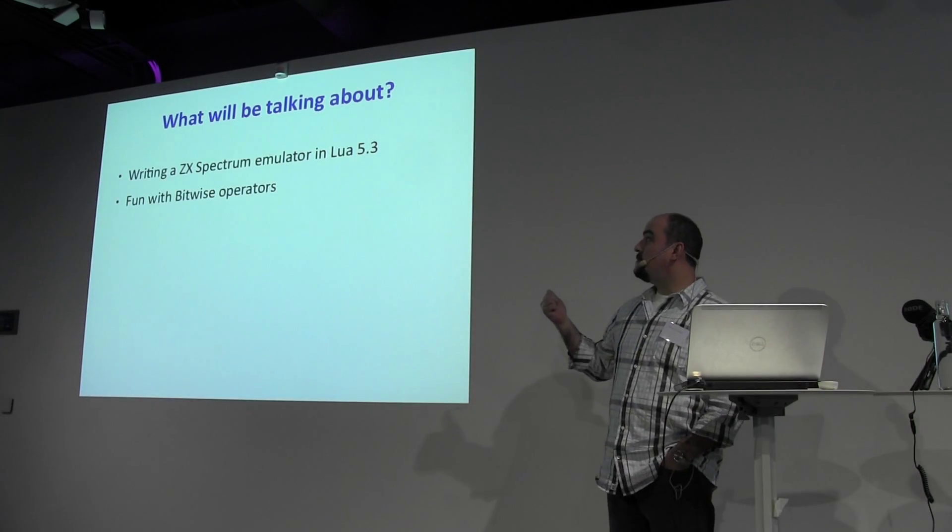Keeping things simple, this is the architecture of the Spectrum. You have a CPU — a Z80 — driven by a clock at 3.5 MHz. You have 16 KB of ROM which has the BASIC interpreter and other stuff, 16 KB of RAM used as video RAM, and the rest is general-purpose RAM. It also interfaces with the keyboard, tape, input and output, and the speaker.